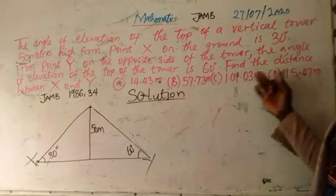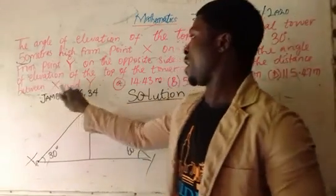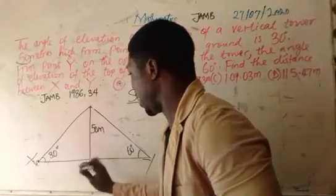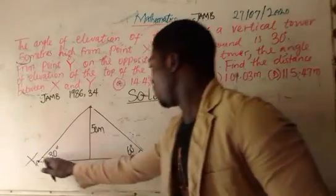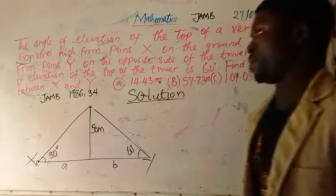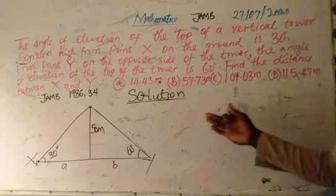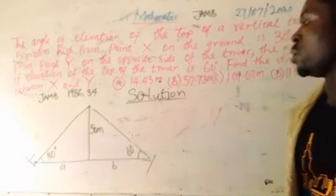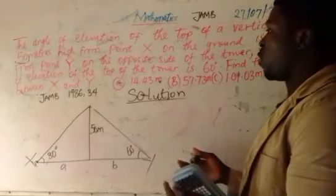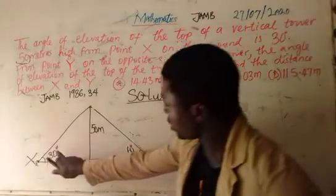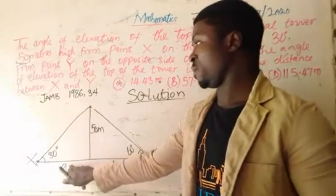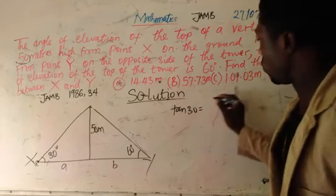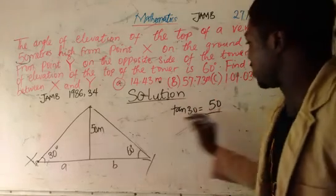What we are expected to calculate is the distance between X and Y — from here to here. We are going to split this distance. Let's assume from the base of the tower to X is a, and from the base of the tower to Y is b. So XY equals a plus b. Applying trigonometry, tan 30 gives us opposite over adjacent, so tan 30 equals 50 over a.